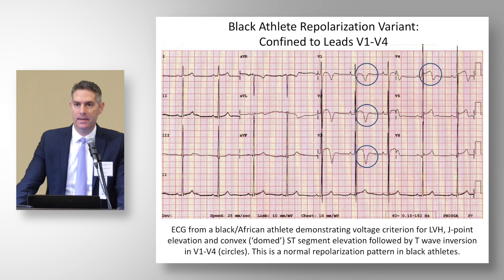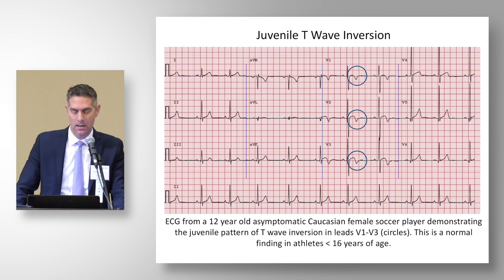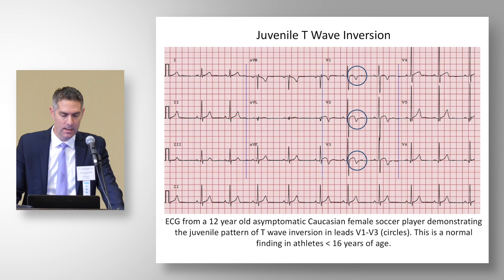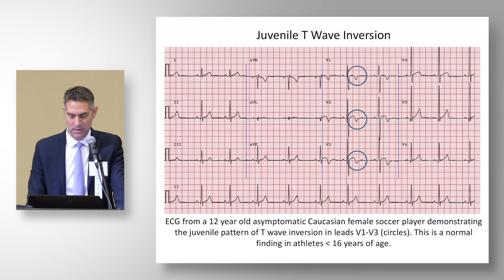Jack Salerno will talk about juvenile T wave inversion. In our practice, this is really important to include in the new criteria because we had many athletes under the age of 16 with T wave inversion extending through V3. The persistence of a juvenile T wave inversion pattern in V1, V2, or V3 in an athlete of any race under the age of 16 should be considered a normal finding in the absence of other clinical markers of concern.